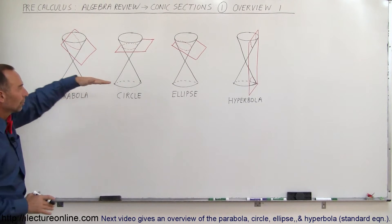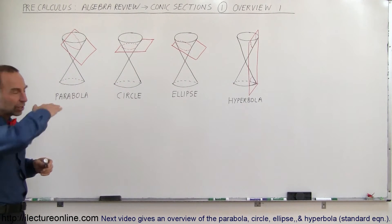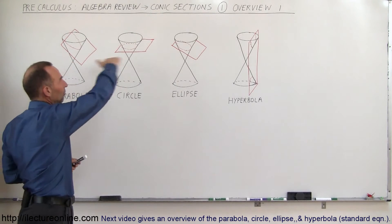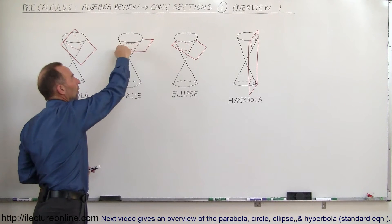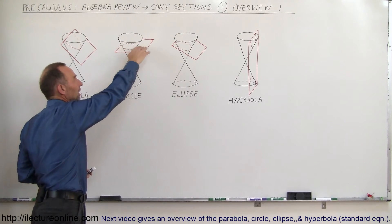If we put the plane flat and cut the cone this way, we end up with a circle where the sheet intersects the cone.